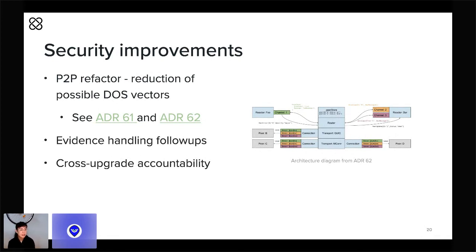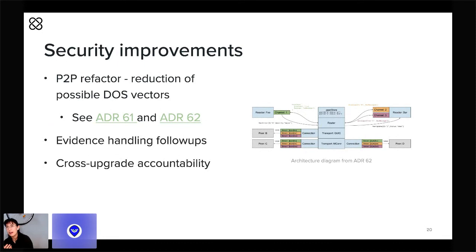Other upcoming security-oriented work includes follow-up work around evidence handling. At the moment, a small number of attack types on light clients specifically are automatically detected and reported, but ultimately have to be handled through operator intervention. In the future, we'd like to give the network everything it needs to prosecute these particular kinds of attacks automatically. We'll also be investing in accountability protocols that can deal with misbehavior that happens across the upgrade boundary, which will be especially important with IBC.